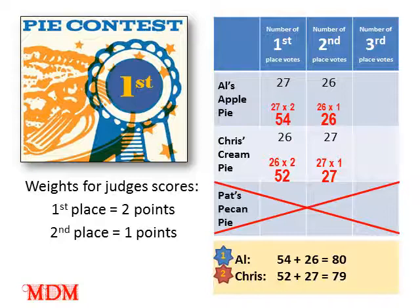This time, Al's apple pie gets first place with 80 points and Chris's cream pie gets second place with 79 points. Notice what happened: because a loser — Pat — dropped out, the winner changed from Chris to Al. This is a violation of the independence of irrelevant alternatives criterion.